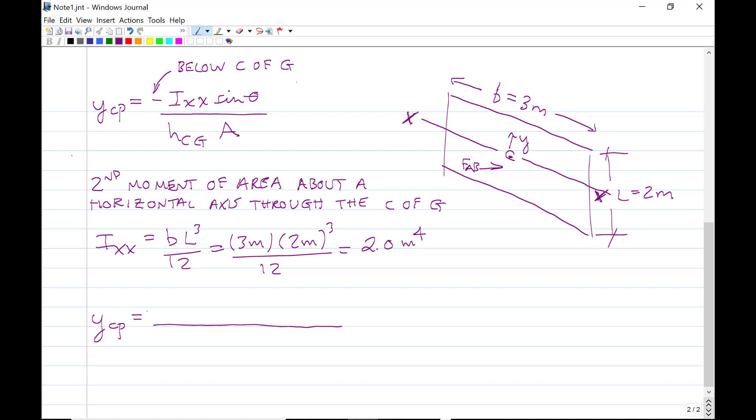So now we can calculate YCP. It's minus 2.0 meters to the 4th. That's Ixx. Now we next have sine theta. Now sine theta is the angle, if you project the gate up to the free surface here, it's the angle that the gate makes with the free surface. And in this case, it's a vertical gate. So theta equals 90 degrees. And the sine of 90 degrees is going to be 1. And we previously showed that HCG, the depth of the centroid from the free surface, was 2.8 meters. And the area of the gate is 6.0 square meters. You can see we have meters to the 4th on the top and meters cubed on the bottom. So that's going to give you minus 0.1190 meters. So we're 0.1190 meters below the centroid.